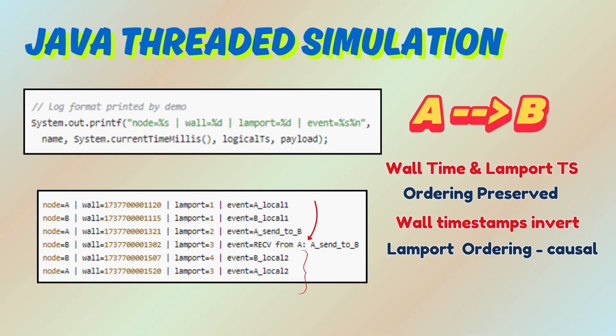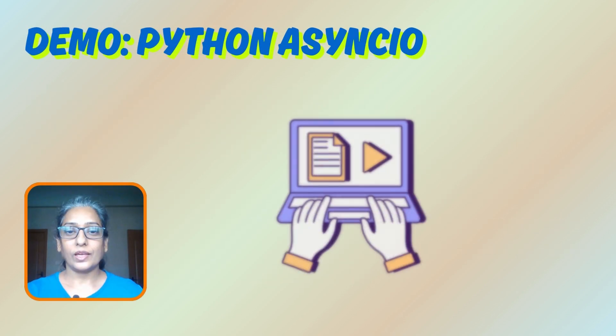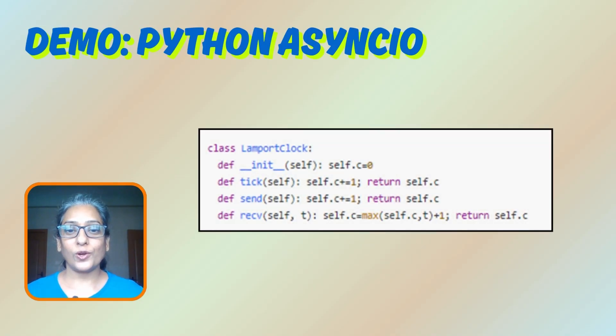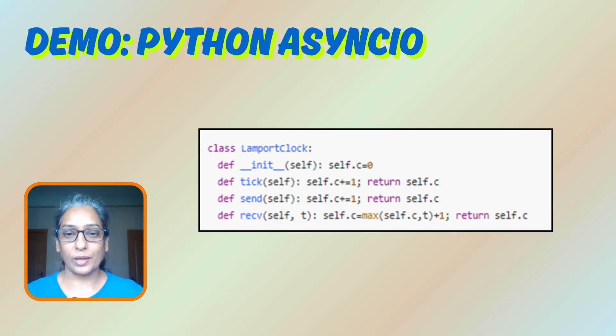See the line where wall timestamps are out of order, but Lamport timestamps correctly reflect the happened-before relation. If you prefer quick demos, here is a compact Python asyncio version that does the same thing — easy to run on your laptop.